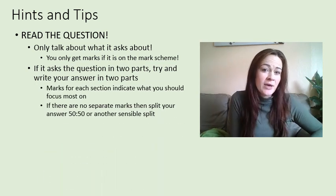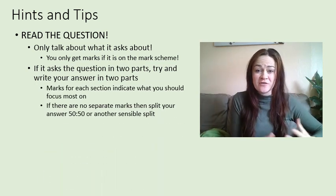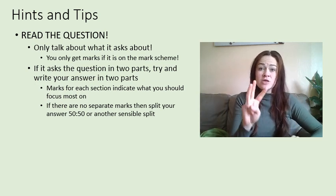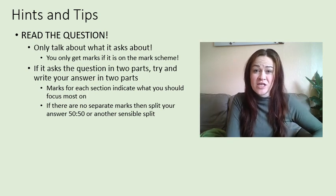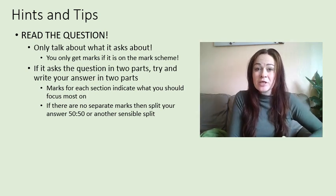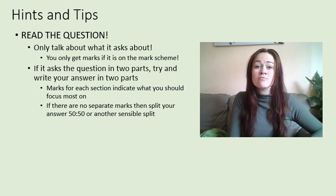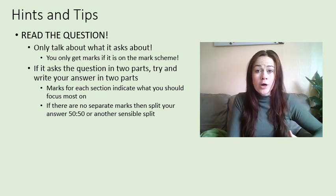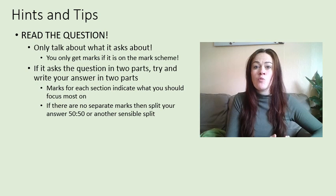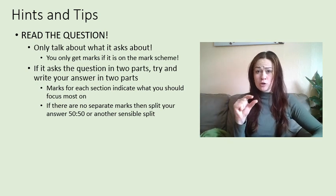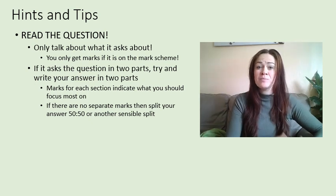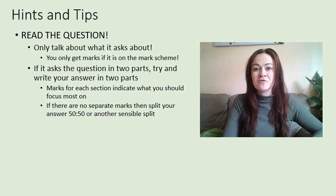Pay attention to how many marks are awarded for each section if it is in two parts, because sometimes you might get three marks for section one and five marks for section two — so section two should obviously be longer. If there are no separate marks given for the two sections, go with a 50-50 split, or a sensible split. If one topic is actually quite small relative to the other, make a few points on the first and save your remaining points for the second.